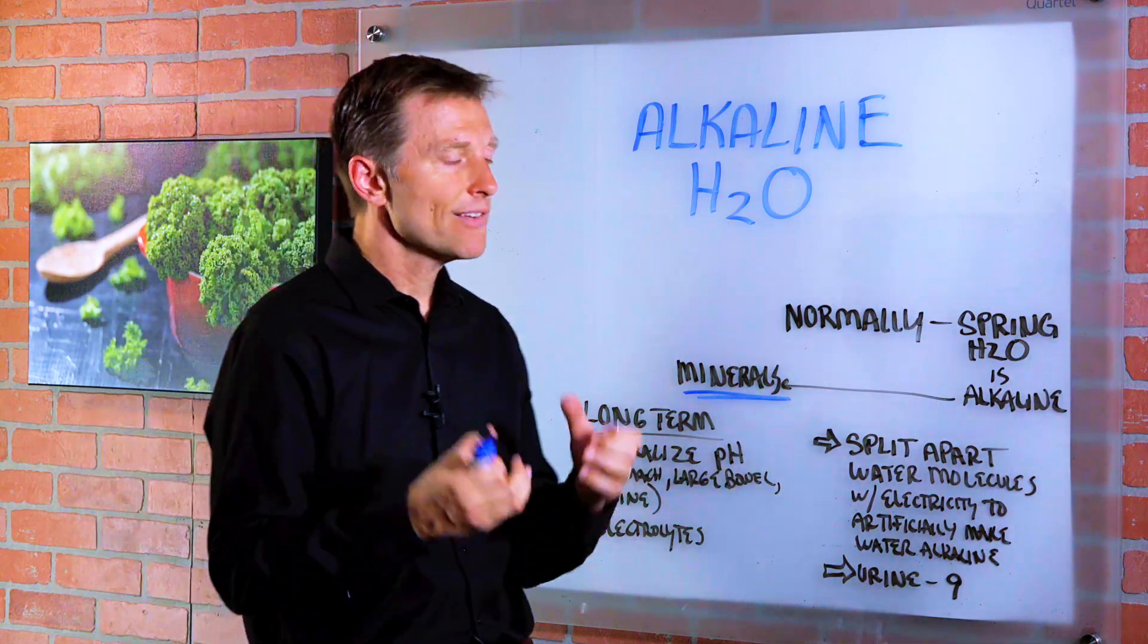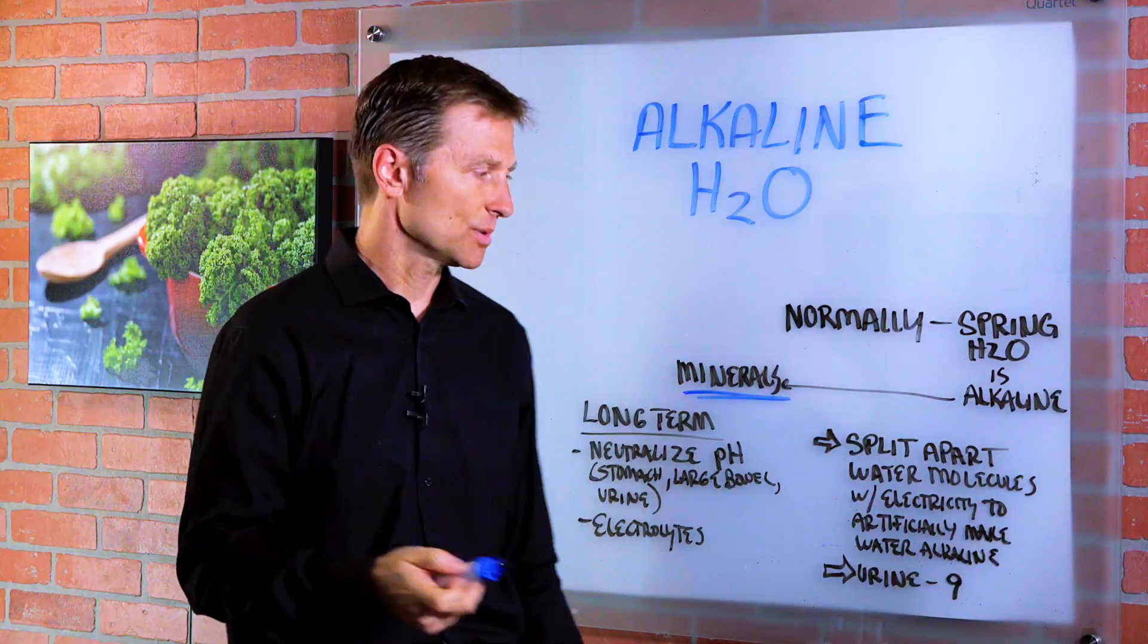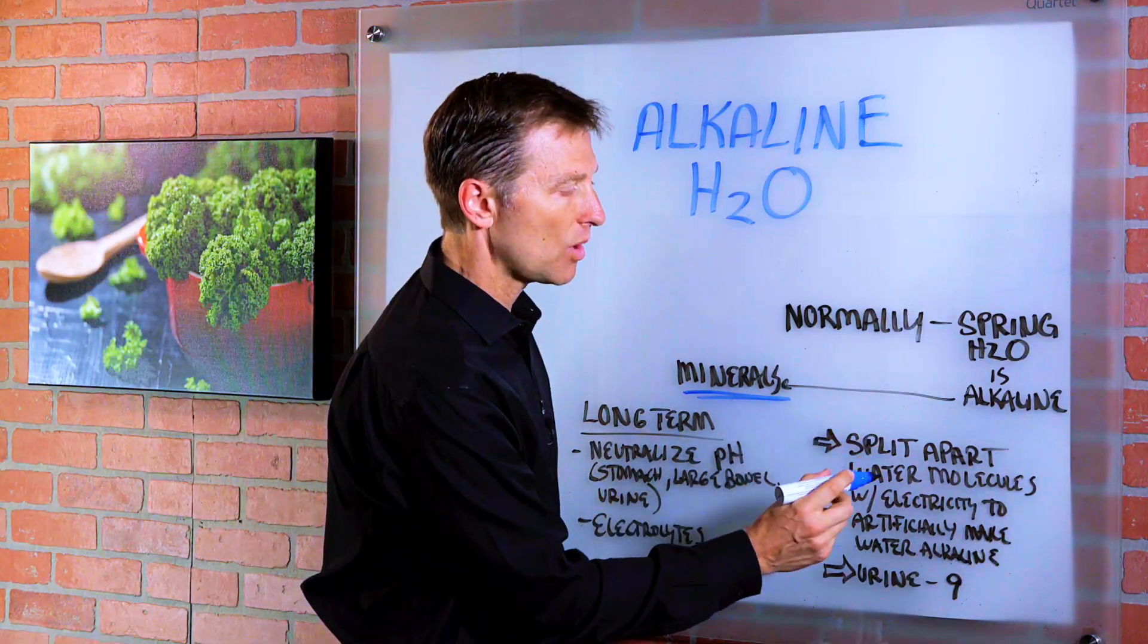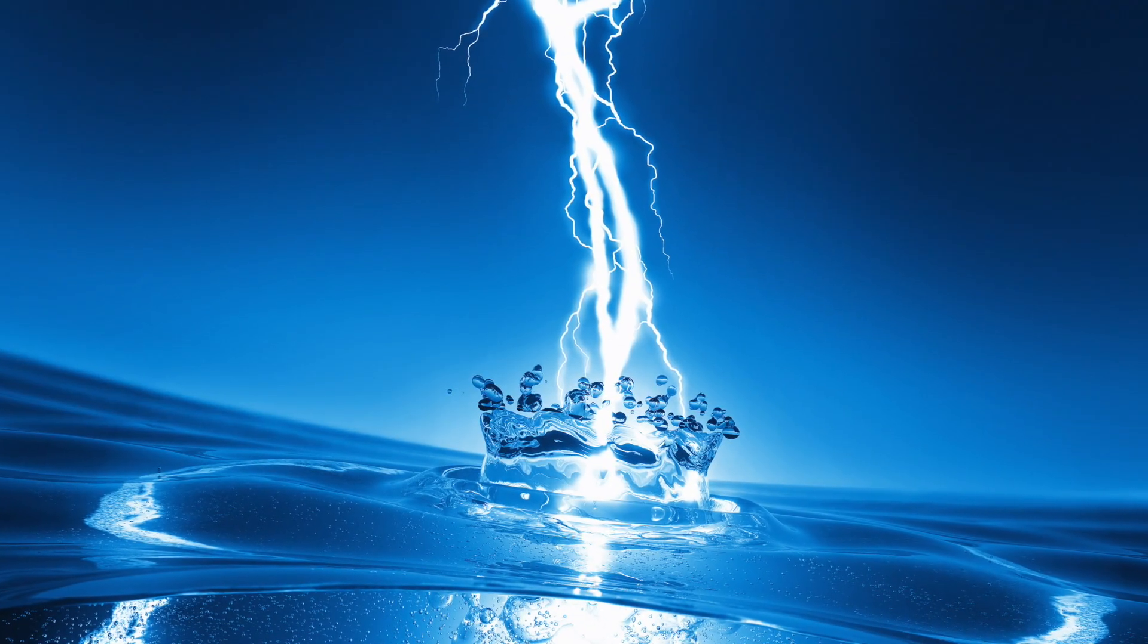But when you actually have a machine that makes your water alkaline, it's not by adding minerals. It's by splitting apart the water molecules with electricity to artificially make the water alkaline.